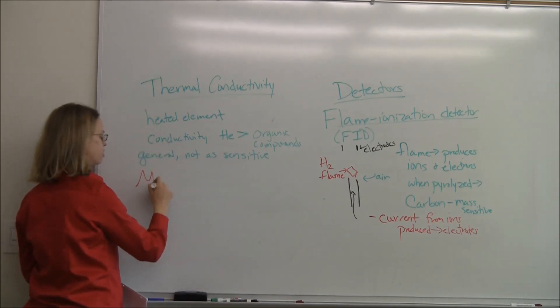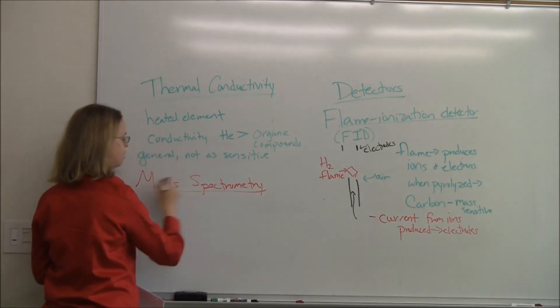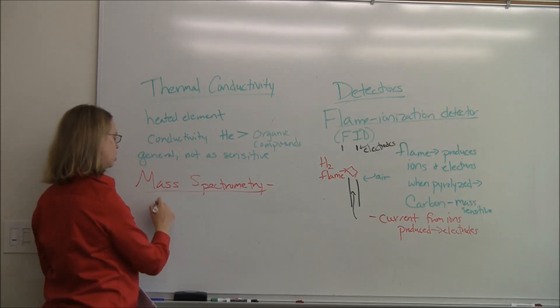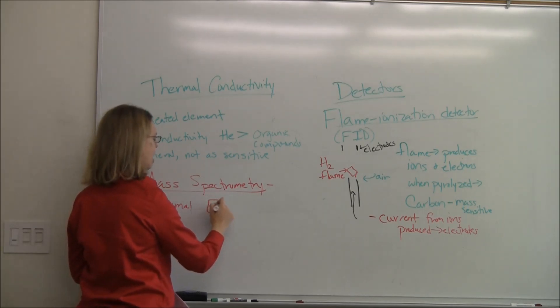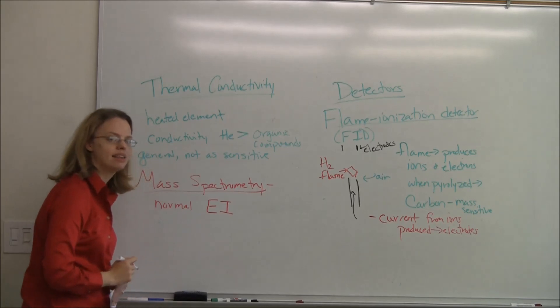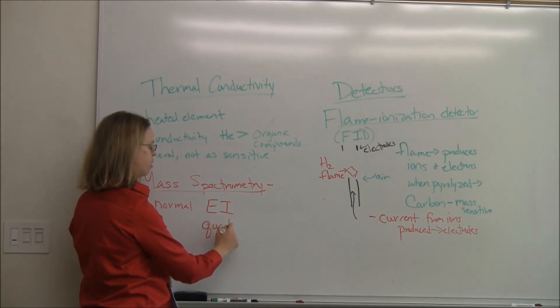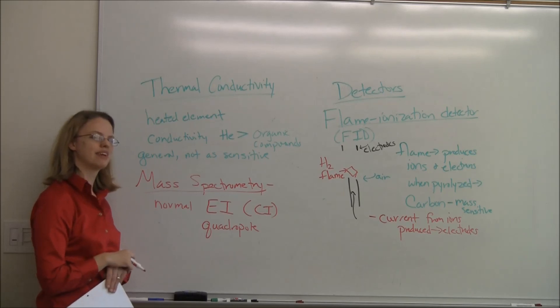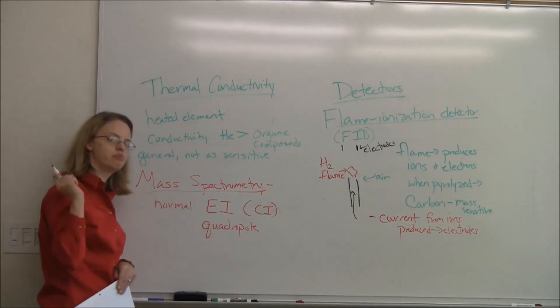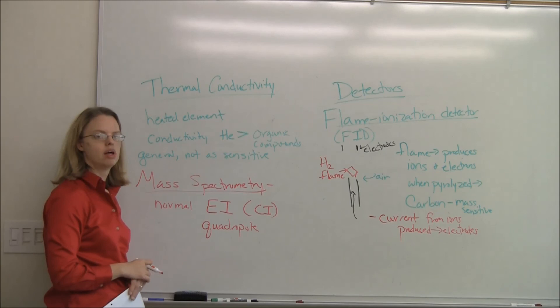The last detector we'll talk about is mass spectrometry. We now have a GC-MS in the lab. The normal one that's connected has electron impact, and we'll cover that in the mass spect lecture, as the ionization source and maybe a quadrupole as its detector. That's at least what we have in here. You can do chemical ionization as well with the instrument we have, but we don't have it set up to do that. With electron impact, you pound it with electrons, make your sample into ions, and then detect it with a quadrupole. We'll cover these concepts more in the mass spect lecture.